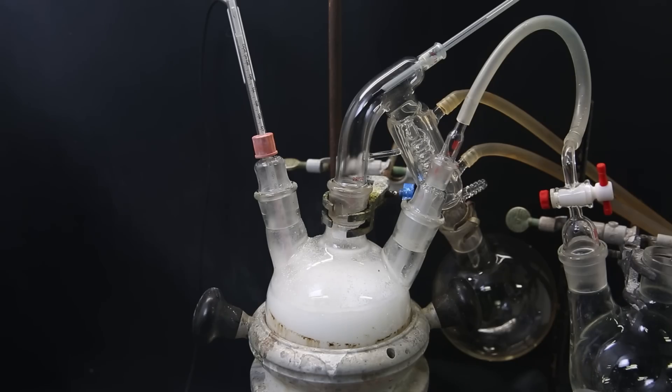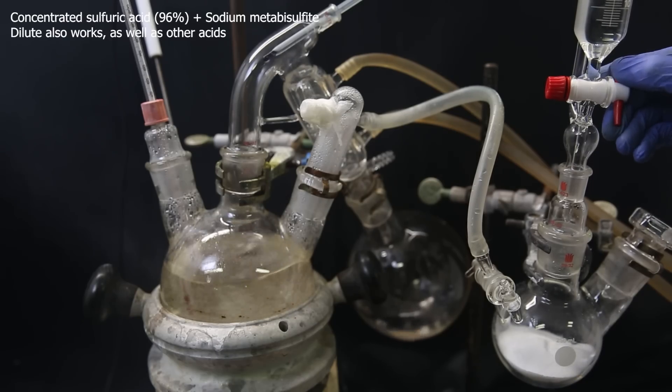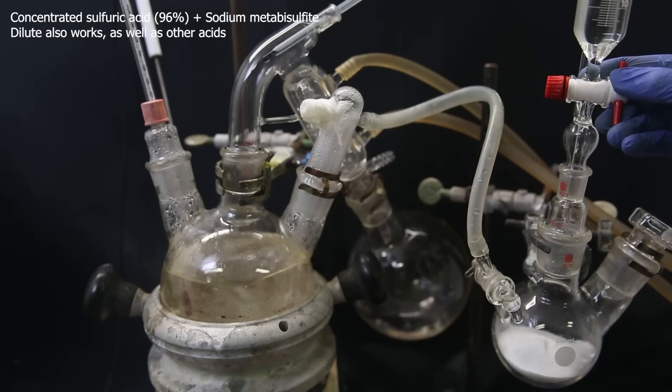Then to the gas inlet tube, I attach a sulfur dioxide generator, which is just a flask that I fill with sodium metabisulfite, and then gradually drop concentrated sulfuric acid into it. But dilute acids and other acids are also fine. Later, I ended up changing the gas inlet adapter and the flask, because I needed the joint adapter for my dropping funnel, of which I apparently only have one. But it works the same.